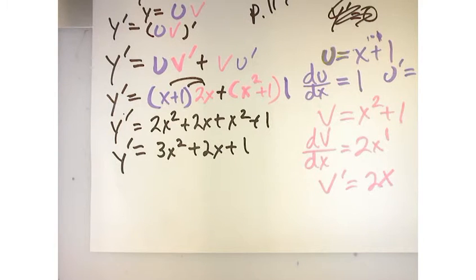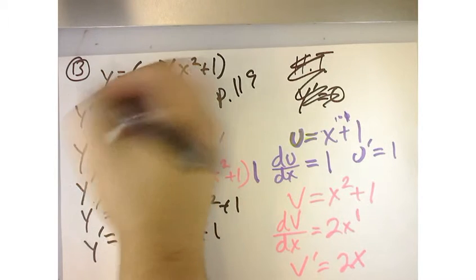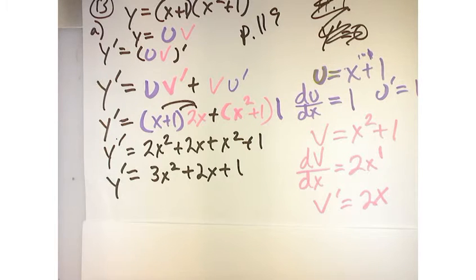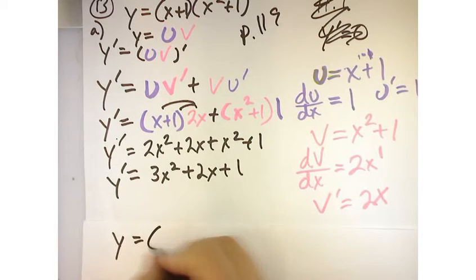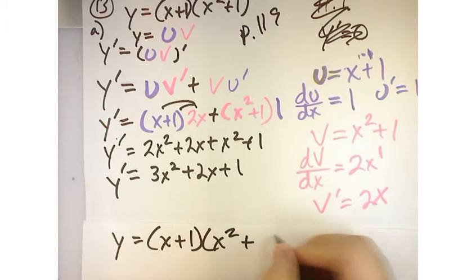And then it says, oh, so this is one way to get the answer, right? So they wanted us to do, so this is part A. Well, yeah, this is part A. What they wanted us to do, okay, so we used the product rule to get the answer.